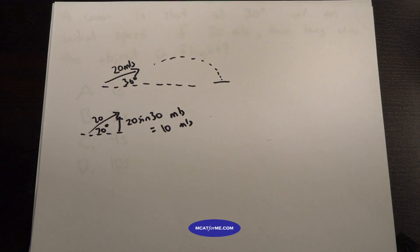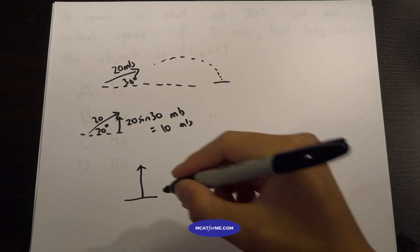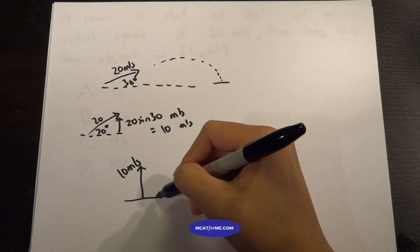So pretty much we can split this question into saying we are on the ground and we shoot an object at 10 meters per second up into the air. How long does it take for it to reach back down to the ground?